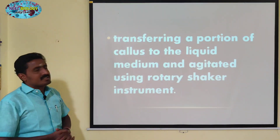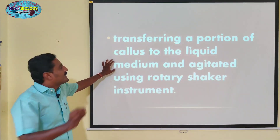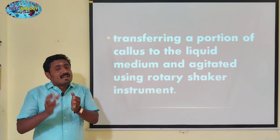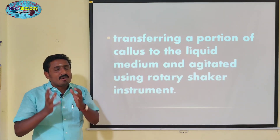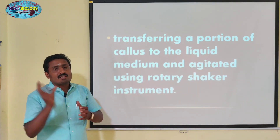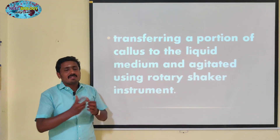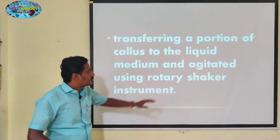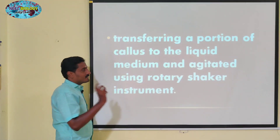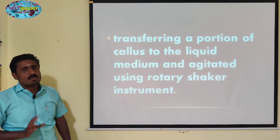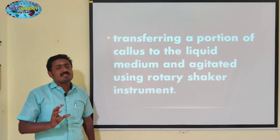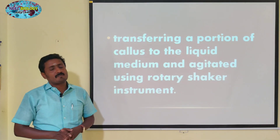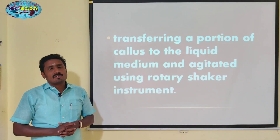Transferring a portion of callus — you take one particular portion of callus and add it to the liquid medium. The nutrients are distributed throughout the liquid medium. We shake the liquid medium continuously using a rotary shaker, which is a machine used for continuous agitation of the medium, to spread nutrients all over the medium.